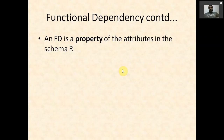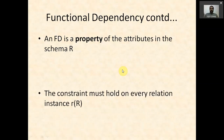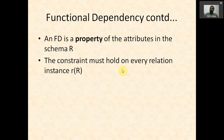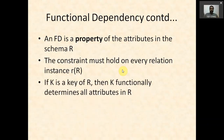An FD — we usually call functional dependency FD — is a property of the attributes in a schema. This constraint must hold on every relation instance of R, meaning whenever we insert, delete, or modify something in the table, this constraint should hold. If Ename is dependent on SSN, that should hold for every operation on the table.